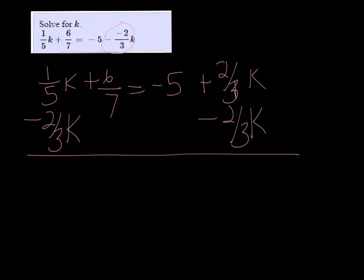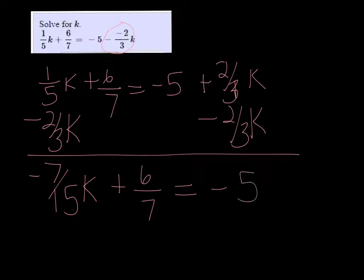So I get negative 7/15k plus 6/7 equals negative 5.